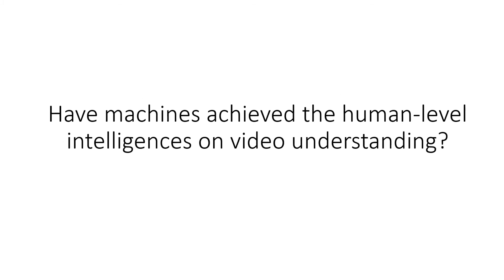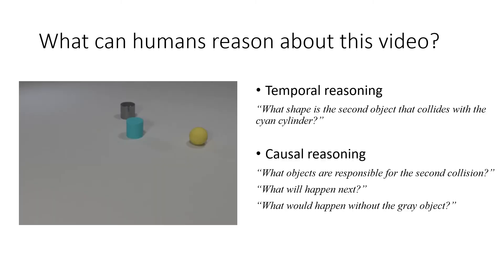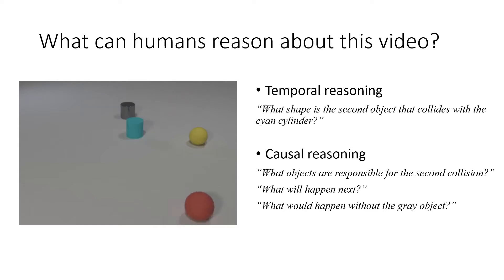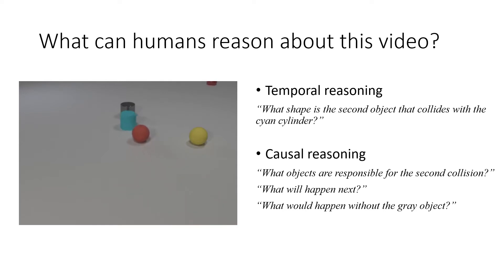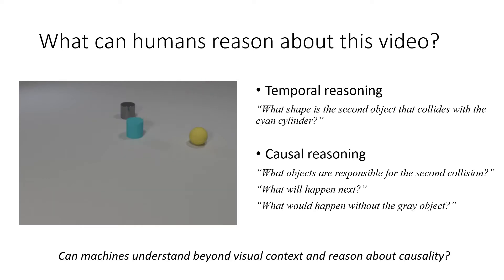We have achieved very impressive results on action recognition. But the natural question arises: have current end-to-end deep learning models already achieved human-level intelligence on video understanding? The answer is probably no. When humans look at a video, not only can we describe the event that happened, but we can also reason about the causal structure behind the events, make predictions about the future, and even imagine counterfactual scenarios. We believe a smart AI system should not only solve pattern recognition, but should also capture cause and effect in the physical world.